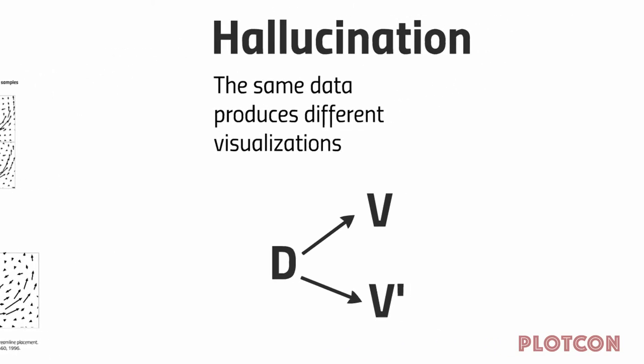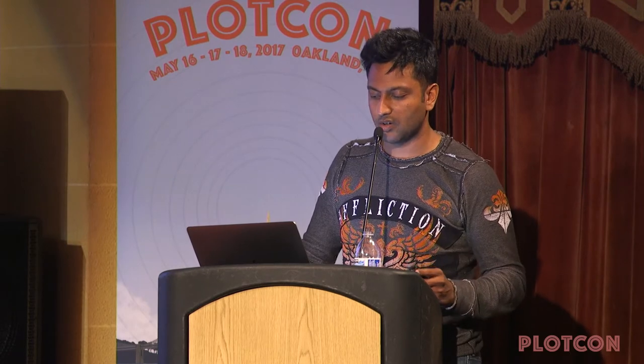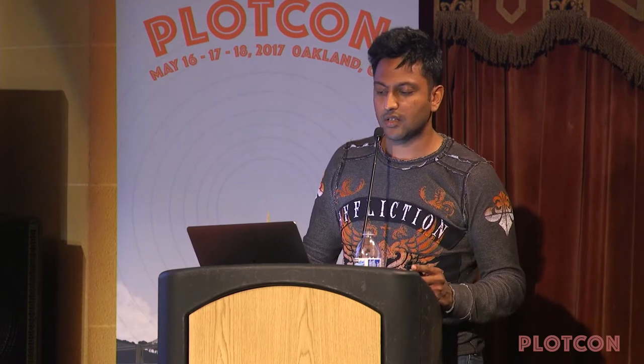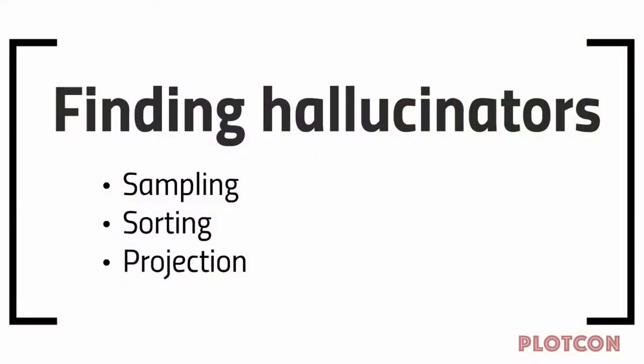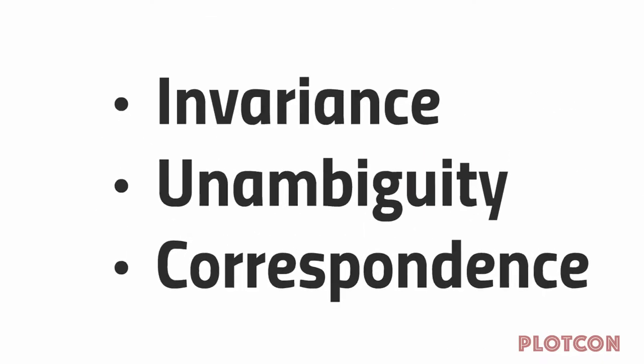Hallucination is when we have the same data but it produces two substantially different visualizations. This is an affront to the truth — two people looking at the same data should derive the same or similar understandings. The places to look for hallucinators are in sampling, sorting, and projection. That's invariance at a high level.